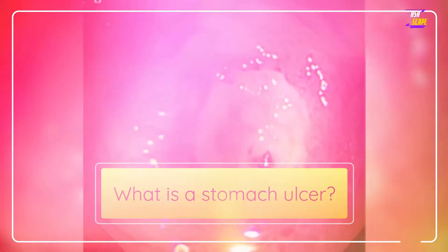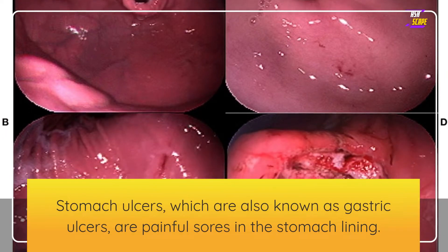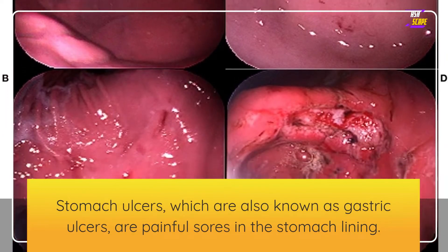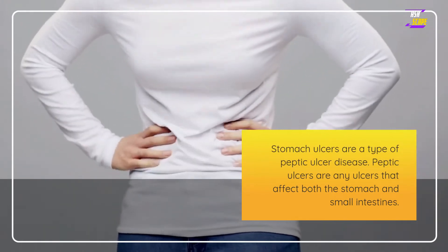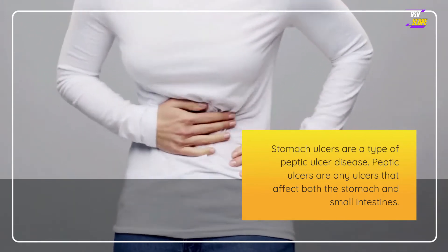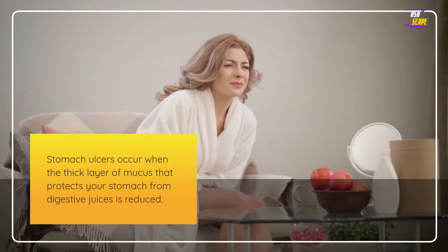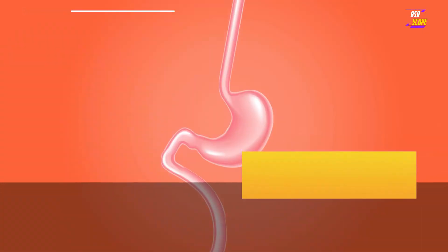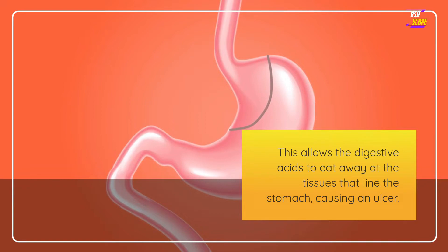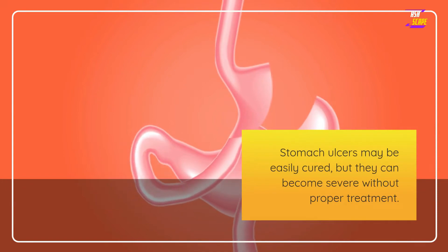What is a stomach ulcer? Stomach ulcers, which are also known as gastric ulcers, are painful sores in the stomach lining. Stomach ulcers are a type of peptic ulcer disease. Peptic ulcers are any ulcers that affect both the stomach and small intestines. Stomach ulcers occur when the thick layer of mucus that protects your stomach from digestive juices is reduced, allowing digestive acids to eat away at the tissues that line the stomach. Stomach ulcers may be easily cured but they can become severe without proper treatment.